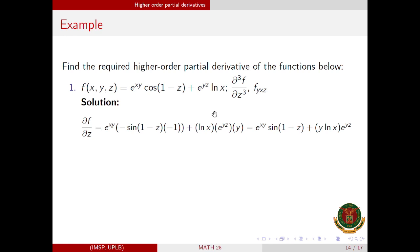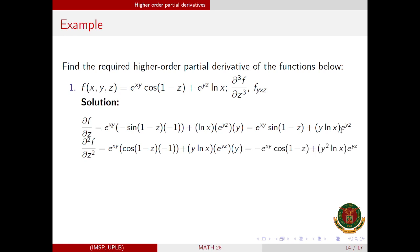Next, we differentiate again with respect to z. e^(xy) is again a constant. The derivative of sine(1 − z) is cosine(1 − z) times −1. Plus, y·ln(x) is a constant, and the derivative of e^(yz) is e^(yz) times y. Simplifying, we have this expression. The answer for the third-order partial derivative is: negative e^(xy) · sine(1 − z) + y³ · ln(x) · e^(yz).